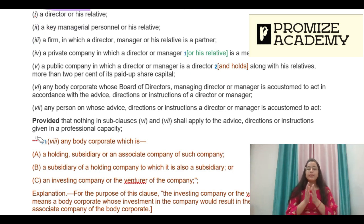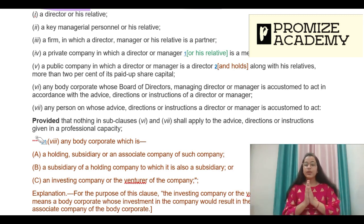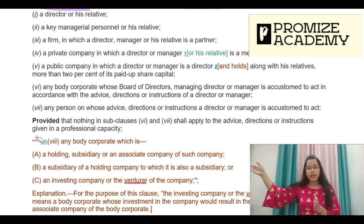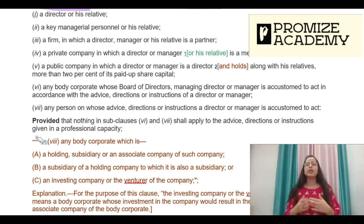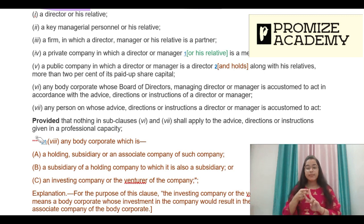The fourth point is any private company — defined under Section 2(68) — in which a Director or Manager or his relative is a member or director. A private company will be treated as a related party when the director or manager is a member or director of that private company. There are many permutations and combinations: if the company's director or manager is a member of that private company, or if he is a director, it will be related to the company.